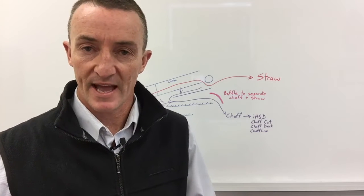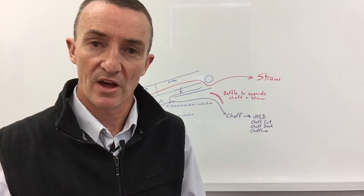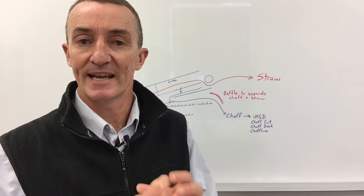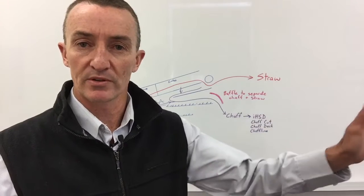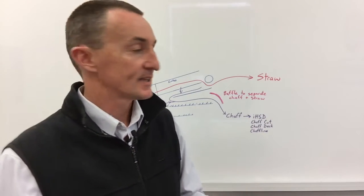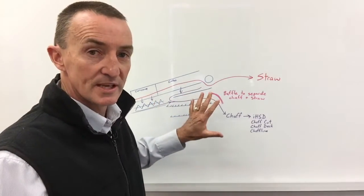That's the integrated destructor, the chaff cart, chaff deck, or chaff line. If you're using one of those systems, you really need to maximize the number of weed seeds in that chaff stream. We don't want to throw the weed seeds out with the straw.